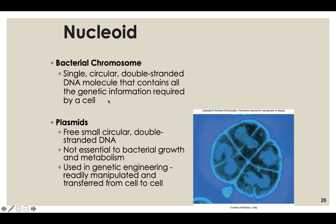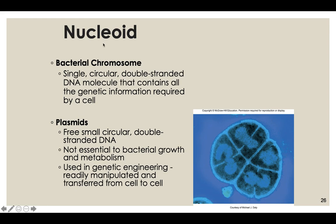Inside the cell you'll find the bacterial chromosome — not surrounded by a membrane, not in a nucleus, and not linear; bacterial chromosomes are circular. They work the same as linear eukaryotic chromosomes in that they allow transmission of genetic information and contain all information needed to make a brand new cell and be fully functional.